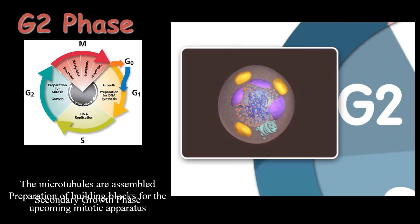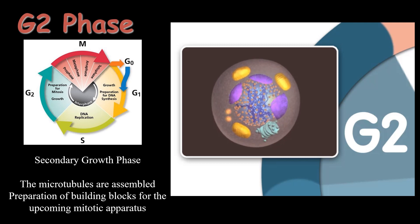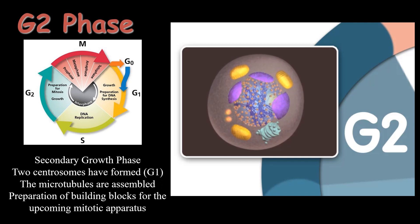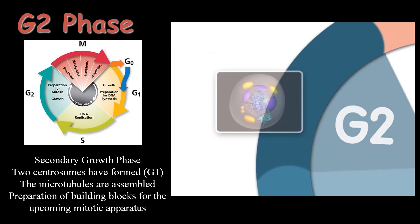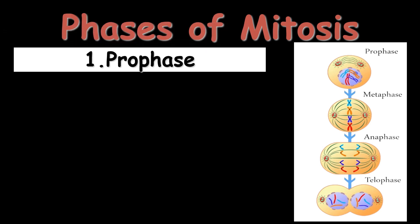The S phase is followed by G2 phase, also known as the secondary growth phase. In G2, the centrosomes — which were already formed and duplicated in G1 — now begin assembling microtubules, and the formation of microtubules takes place. All the preparation that will be utilized in the M phase takes place in G2. All the building blocks for the upcoming mitosis phase are prepared in G2.